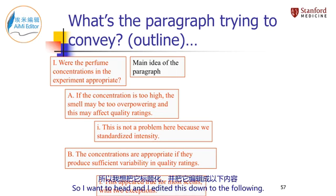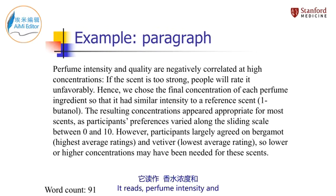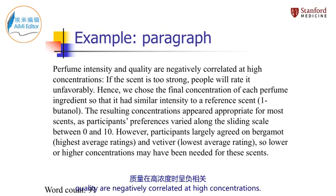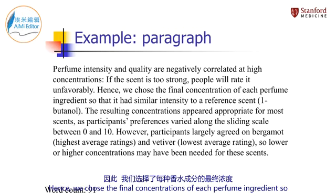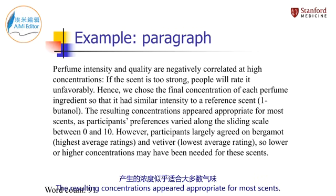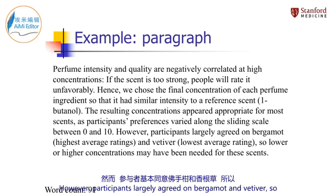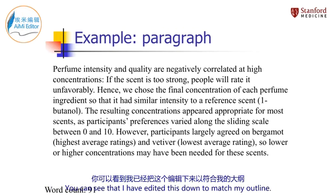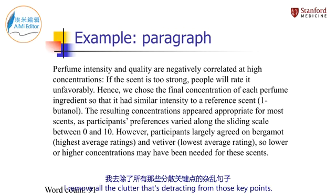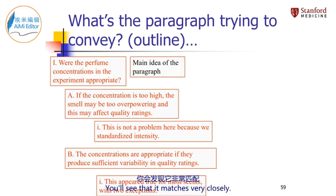I went ahead and edited this down to the following. I reduced it from 212 words to 91 words. It reads: Perfume intensity and quality are negatively correlated at high concentrations. If the scent is too strong, people will rate it unfavorably. Hence, we chose the final concentrations of each perfume ingredient so that it had similar intensity to our reference scent. The resulting concentrations appeared appropriate for most scents, as participants' preferences varied along the sliding scale between 0 and 10. However, participants largely agreed on bergamot and vetiver, so lower or higher concentrations may have been needed for these scents. You can see that I've edited this down to match my outline — just those key points, with all the clutter removed. You can check back to the outline and make sure that we hit all of these main points. You'll see that it matches very closely.